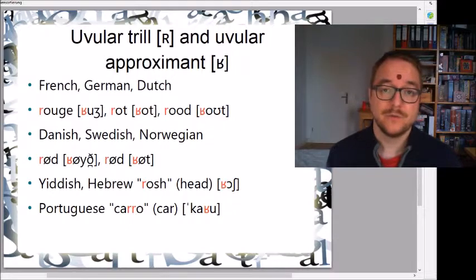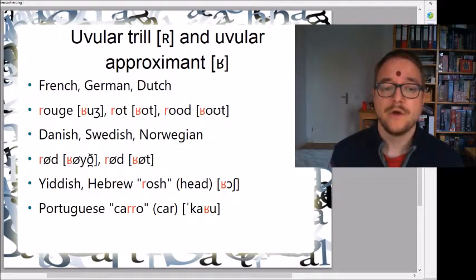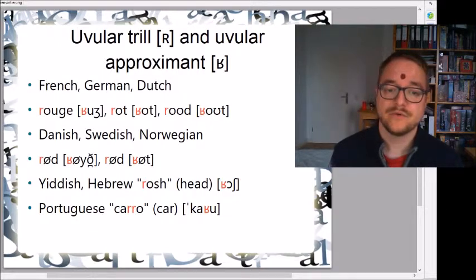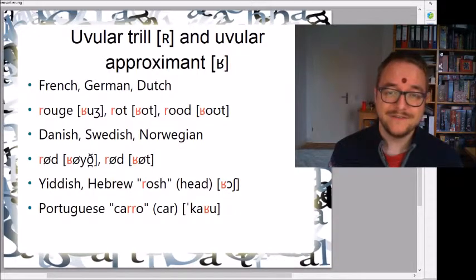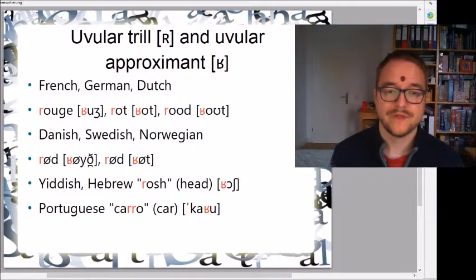In Danish, Swedish, and Norwegian — at least in some dialects — they also have the uvular approximant. The word for red is 'rød' in Danish, and 'rød' in some Norwegian dialects. Yiddish and Hebrew also have the uvular approximant, like 'rosh' meaning head. And Portuguese has a uvular version at the beginning of a word or when there is a double R, for example 'carro'.